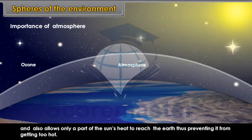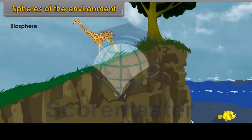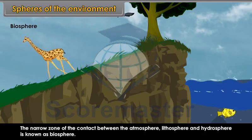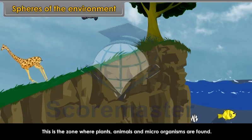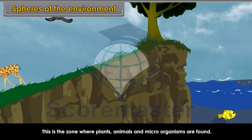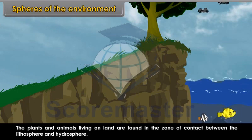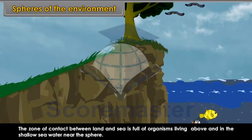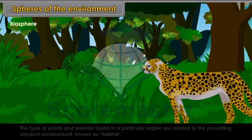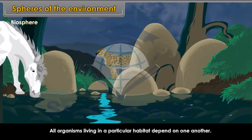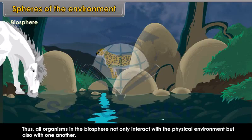Biosphere. The narrow zone of contact between atmosphere, lithosphere and hydrosphere is known as biosphere. This is the zone where plants, animals and microorganisms are found. The plants and animals living on land are found in the zone of contact between the lithosphere and hydrosphere. The type of plants and animals found in a particular region are related to the prevailing physical environment known as habitat. All organisms living in a particular habitat depend on one another, and thus all organisms in the biosphere not only interact with the physical environment but also with one another.